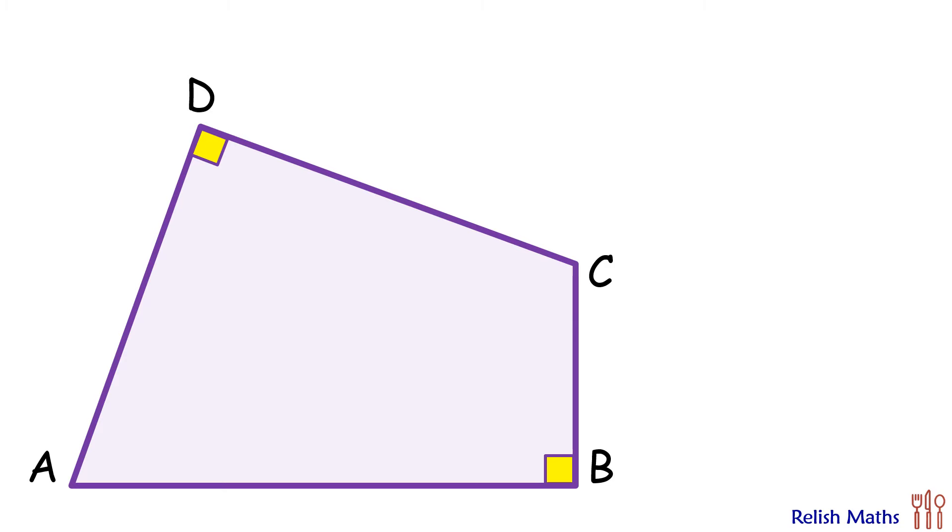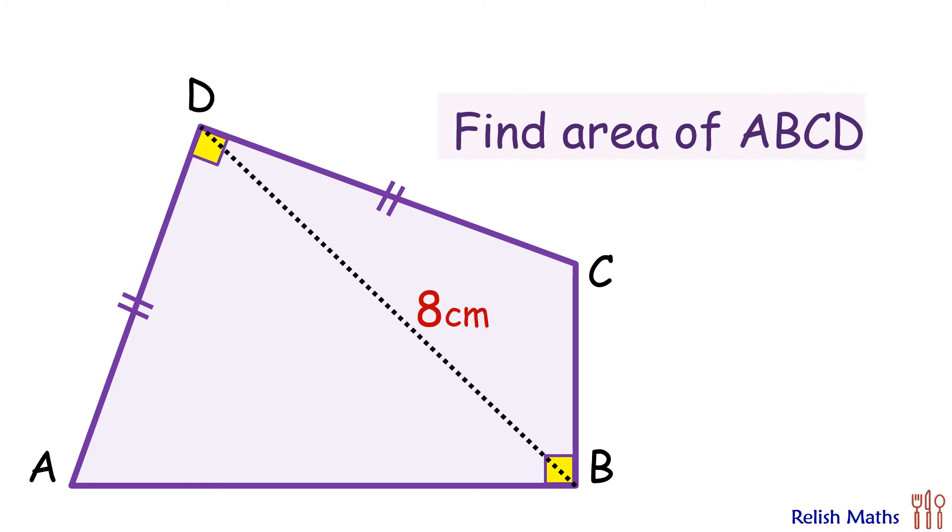In this interesting question, in the quadrilateral given, angles B and D are 90 degrees, AD and DC, the adjacent sides, are equal, and the length of diagonal BD is given as 8 cm. Using only this data, we have to find what is the area of quadrilateral ABCD.